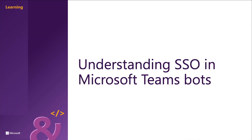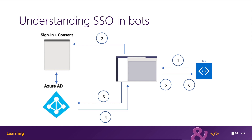Let's start by looking at how the SSO process works at runtime in bots. The bot sends a message with an OAuth card that contains the token exchange resource property, which tells Microsoft Teams to obtain an authentication token for the bot application. The user receives this message at all active user endpoints. Keep in mind, the user can have more than one active endpoint at any given time, and the bot token is received from every active user endpoint.